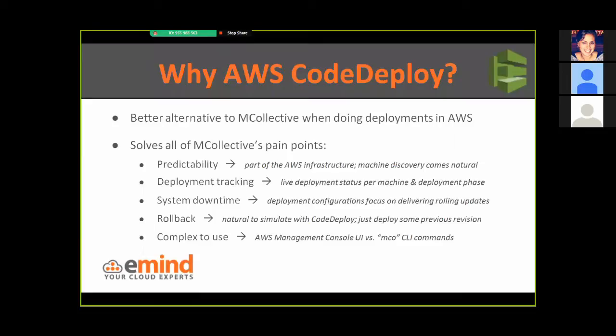Regarding rollback, there is no automatic support in either MCollective or CodeDeploy. But with MCollective we had to engineer rollback ourselves in the code, while in CodeDeploy it's as simple as deploying a previous working revision. Finally, use complexity — the management console UI is far more trivial to use compared to triggering MCO CLI commands.